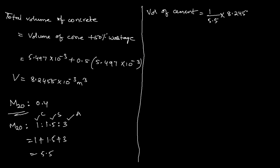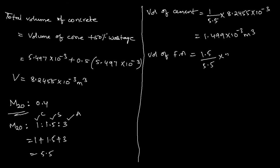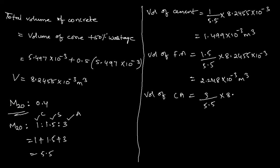Volume of fine aggregate = (1.5/5.5) × 8.2455 × 10⁻³ = 2.248 × 10⁻³ m³. Volume of coarse aggregate = (3/5.5) × 8.2455 × 10⁻³ = 4.497 × 10⁻³ m³. So we have calculated the volumes of all three material constituents — cement, fine aggregate, and coarse aggregate.